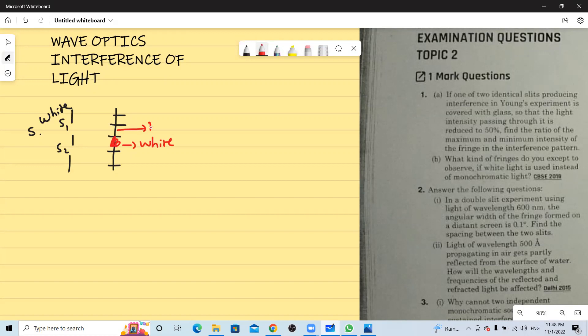And the next fringe will be blue in color. Since the wavelength is less, the next one will be blue in color and the last will be red in color. So the fringe which is farthest from the central bright fringe will be red in color. And also the fringe width formula is beta equals lambda d by D.